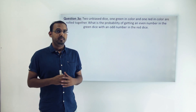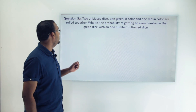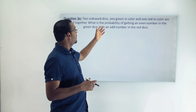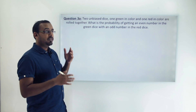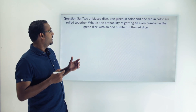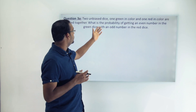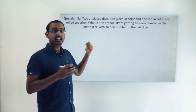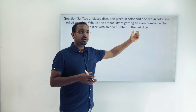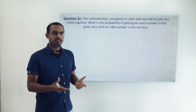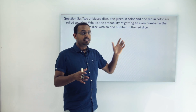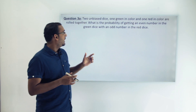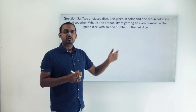This is the experiment where we roll two dice together. The question tells us that there are two unbiased dice — one green in color and one red in color — and we roll these two dice together. The question asks us to calculate the probability of getting an even number on the green die and an odd number on the red die.